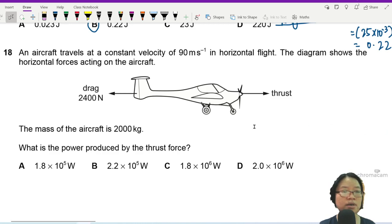Question 18. An aircraft travels at a constant velocity of 90 meters per second in horizontal flight. So this is going to fly.